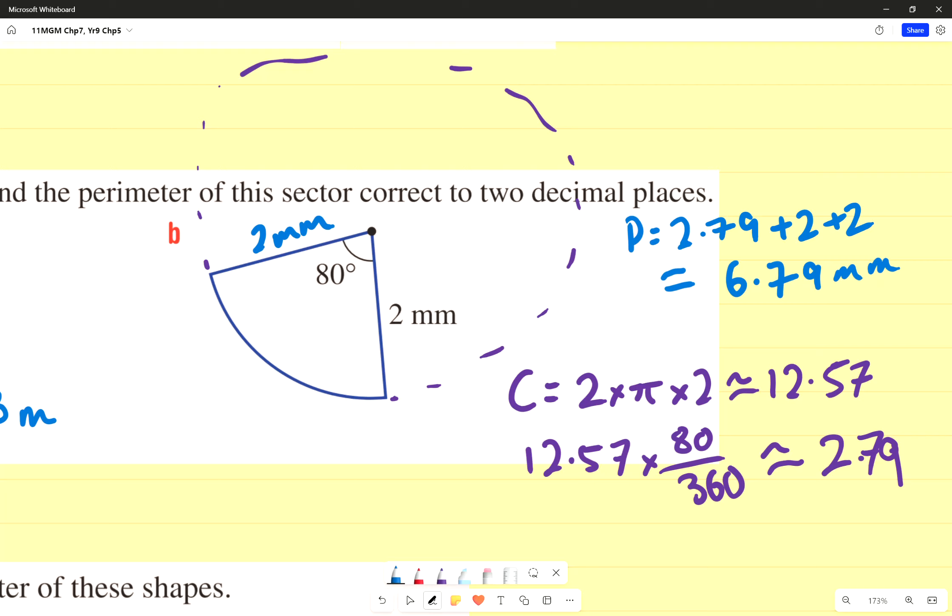And I need to add these sides as well. Any questions about that? When we do area, area of a sector, same thing, we'll have to find that proportion of the whole circles. Just keep that in mind.